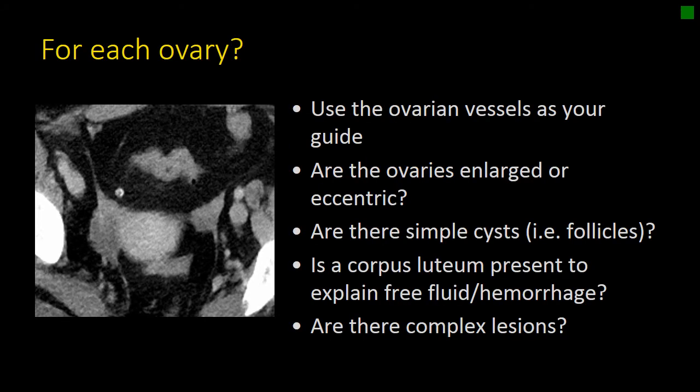Now let's discuss the ovaries. When evaluating the ovary, one of the biggest challenges that trainees have is just finding and identifying the ovary and distinguishing it from adjacent structures, such as bowel, lymph nodes, or vessels. I really like to use the ovarian vessels or the gonadal vessels as my guide — following them down the retroperitoneum right up to the ovary. You can also use the round ligament to triangulate with the ovarian vessels to find the ovary.